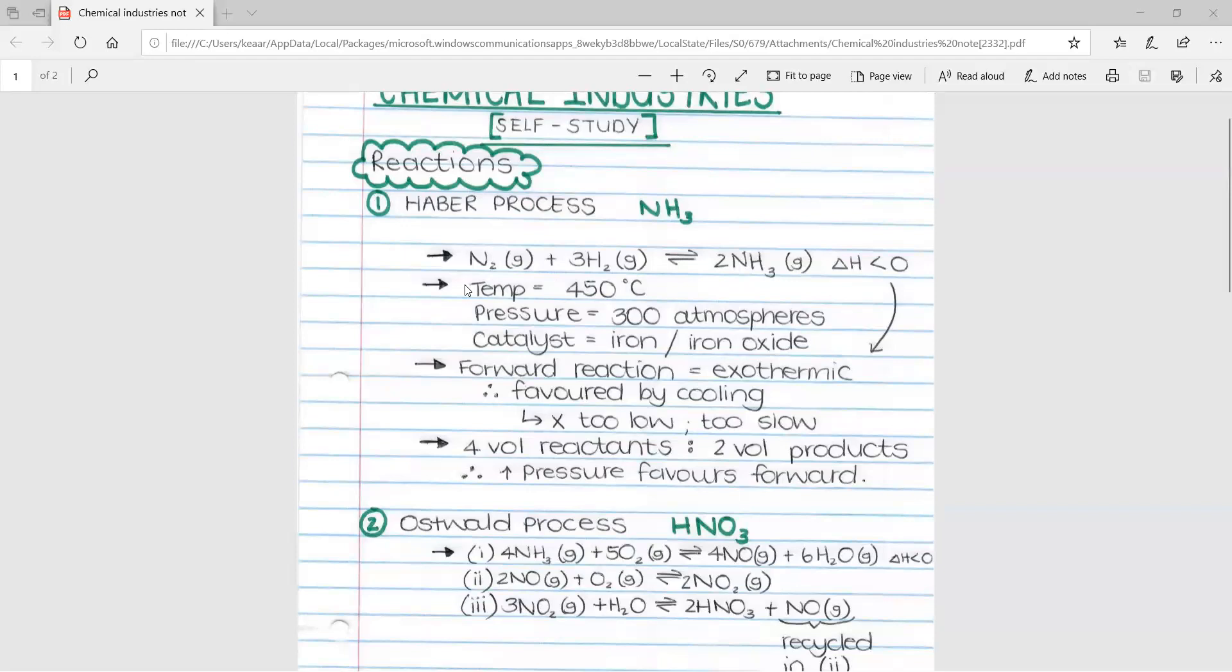A few characteristics of this reaction. Its temperature is 450 degrees Celsius. The pressure is 300 atmospheres. The catalyst is iron or iron oxide. We see from delta H less than zero that our forward reaction is exothermic, which means that our forward reaction will be favored by cooling.